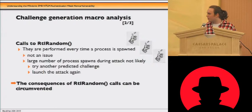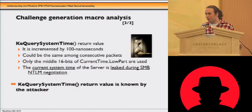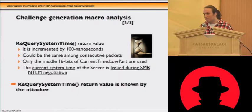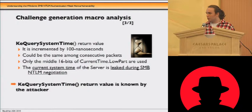What will be the time when the get encryption function is called? Based on the protocol, the time could be the same among consecutive packets, and only the middle 16 bits — probably the most volatile part of that value — are used. We also found that the current system time of the server is sent to the attacker during SMB negotiation, so the current system time can be predicted or known by the attacker.